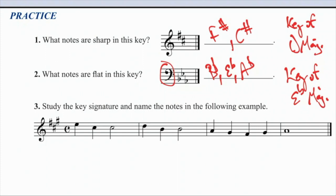Study the key signature and name the notes in the following example. The key signature is F sharp, C sharp, and G sharp. We would be in the key of A major. Let's identify the notes.